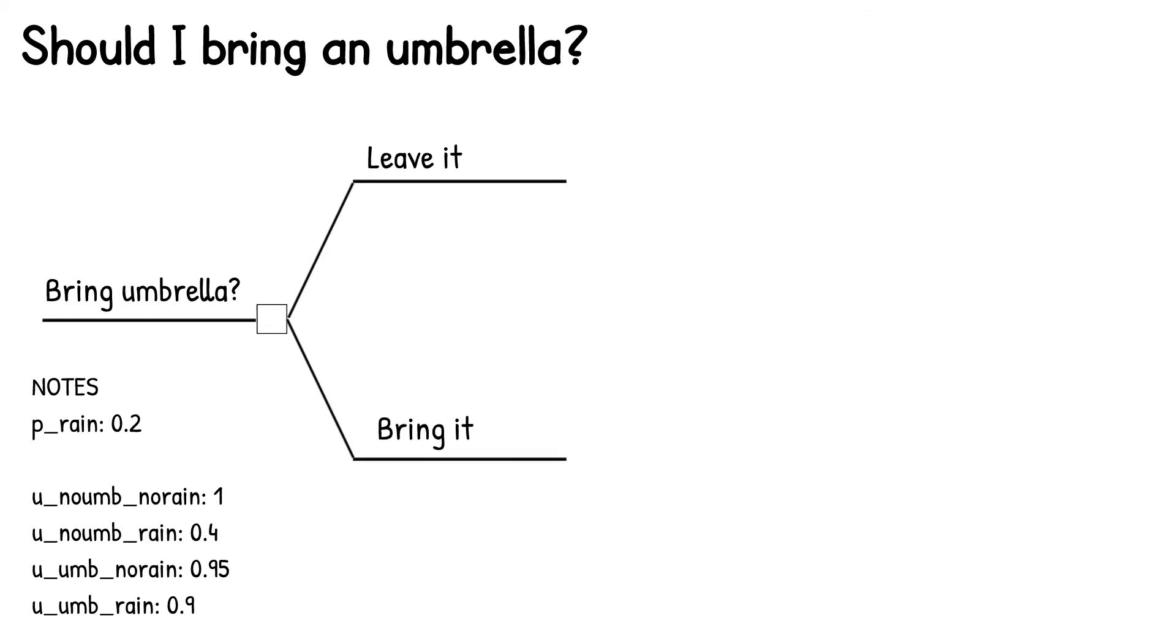So starting with the top branch here, if we leave the umbrella behind, there are two distinct possibilities or chances, which means we now need a chance or a probability node. Those two possibilities are either that it doesn't rain, or that it rains. And you'll recall from earlier, or from the bottom left here, that we decided the probability it was going to rain was 20%, or 0.2. So we will write that here under rain. And meaning the chance that it's not going to rain is 80%, or 0.8. So we'll write that up there. And since each of these represents the end of their branch in the decision tree, we'll cap each of them off with a little terminal node right on the end.